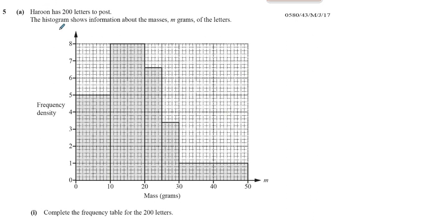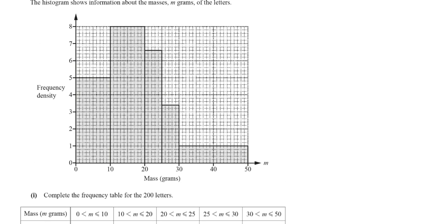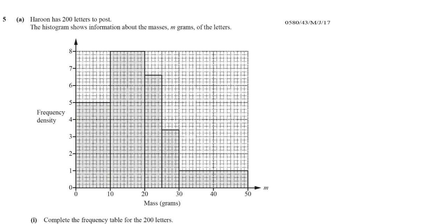We are given a complete histogram and we are asked to complete the frequency table which is associated with this histogram, which is drawn below. This is the frequency table we have to fill in. The histogram shows the masses of 200 letters that Harun has to post. So inside this histogram there are 200 letters represented and their masses are divided into different groups in unequal intervals.